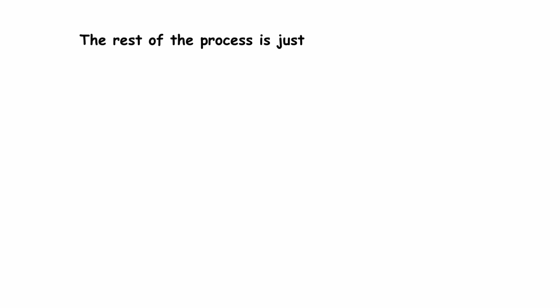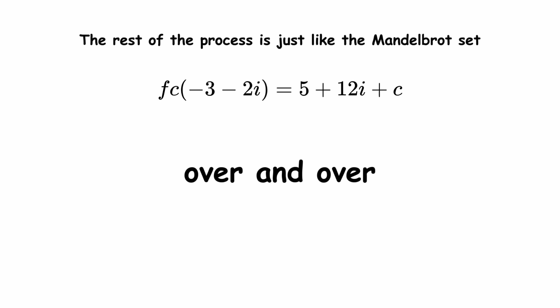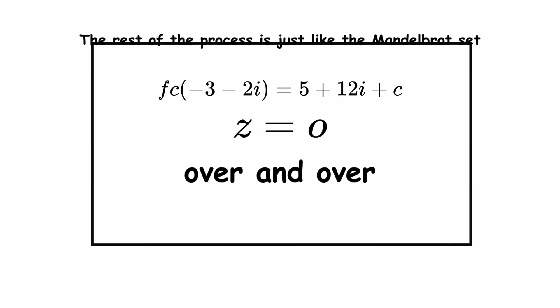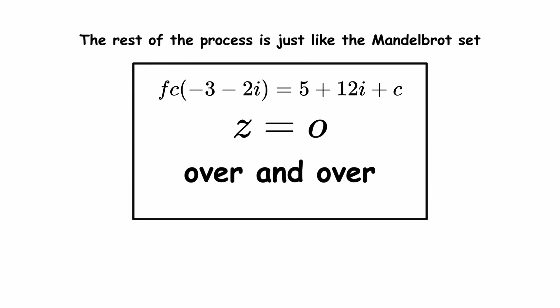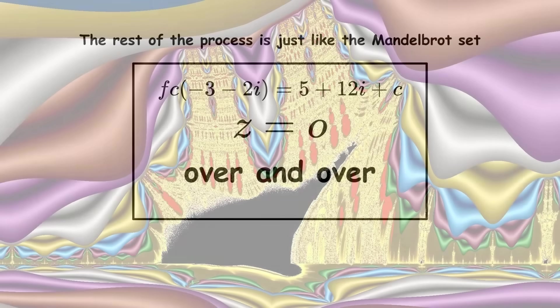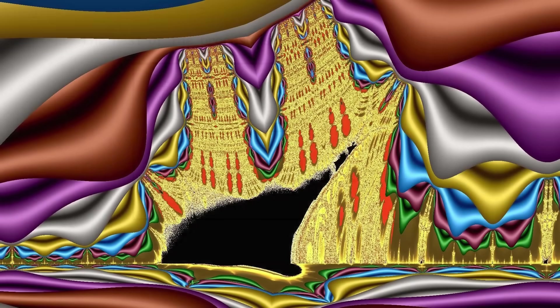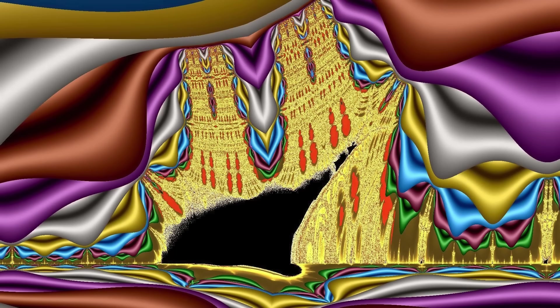The rest of the process is just like the Mandelbrot set. We start by selecting a value of c, then we take this function and apply it over and over, starting with z equals 0. If the value stays bounded, then c is in the burning ship. Drawing all such values, coloring other values based on their speed of divergence, and vertically flipping the image because it looks nicer, we get this result.